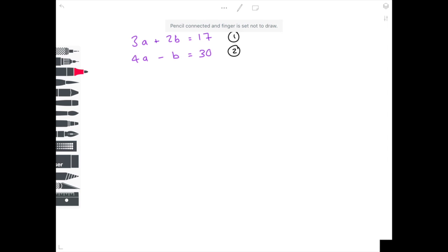I've decided that I want my b coefficients to be the same, and therefore, in order to do that, I clearly need to multiply equation 2 by 2, and that becomes 8a minus 2b equals 60. I'm going to write out equation 1 beneath it just so that they're lined up and I can see what I'm doing.